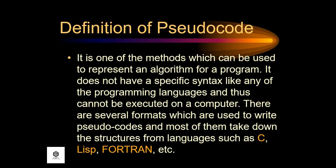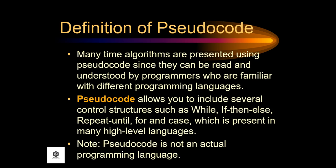Pseudocode is one of the methods which can be used to represent an algorithm for a program. It does not have a specific syntax like any of the programming languages and thus cannot be executed on a computer. There are several formats used to write pseudocode and most of them take down structures from languages such as C, LISP, FORTRAN, and so on. Many times algorithms are presented using pseudocode since they can be read and understood by programmers who are familiar with different programming languages. Pseudocode allows you to include several control structures such as while, if-then-else, repeat-until, for, and case, which are present in many high-level languages.